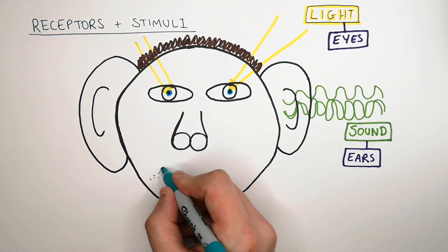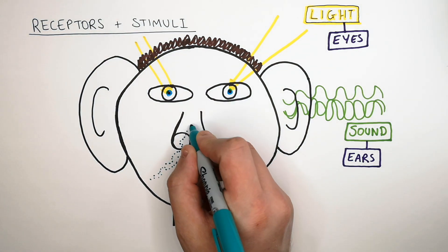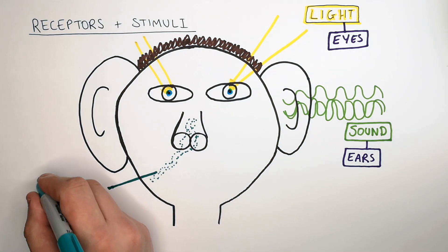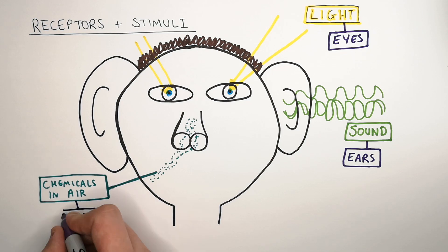Your nose is another receptor. Receptors in your nose detect chemicals in the air. They do not detect smell. Detecting chemicals in the air gives you the ability to smell. The chemicals in the air are the stimulus and the receptor is the nose.